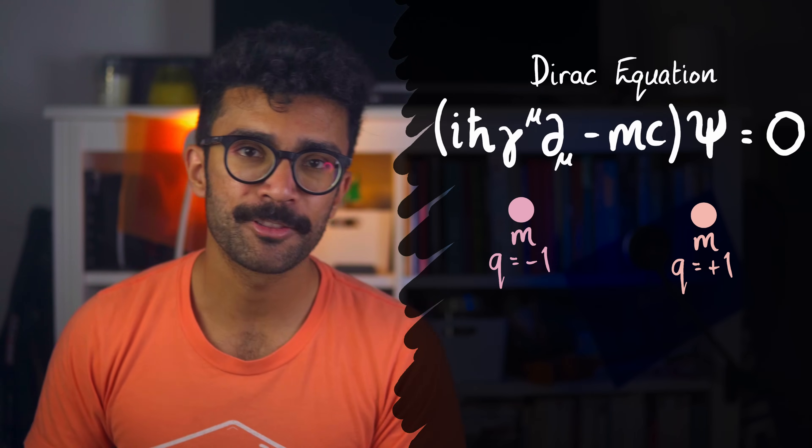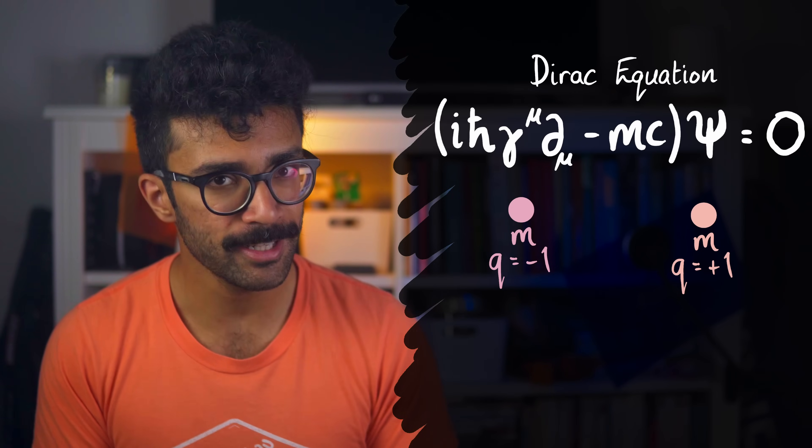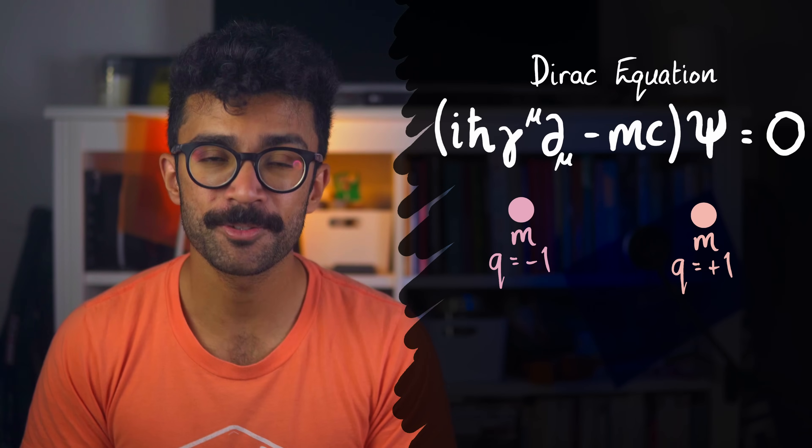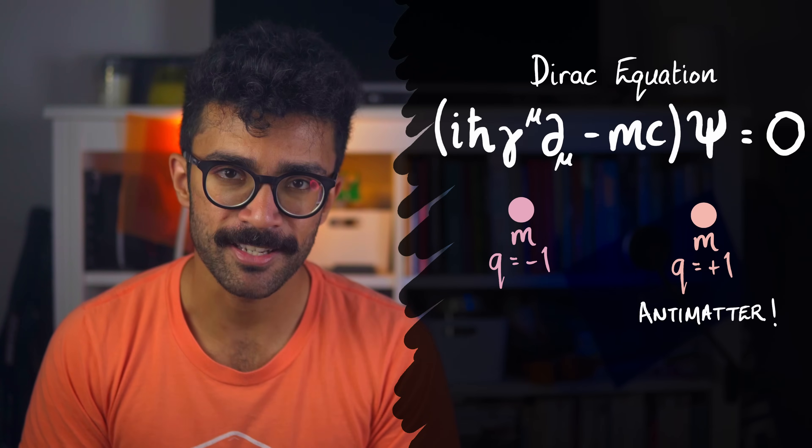At first, Paul Dirac thought that this was a mistake in his mathematics, and that his equation wasn't constrained enough. But then it turned out that these kinds of particles do actually exist. Nowadays, we call them antimatter.